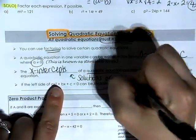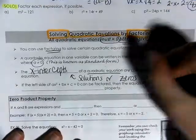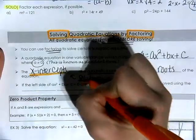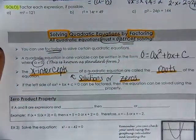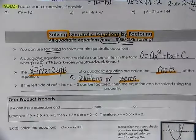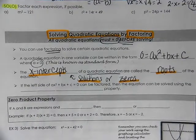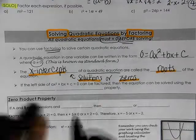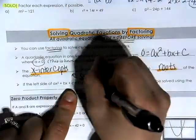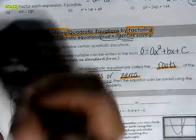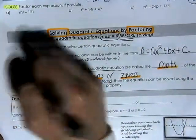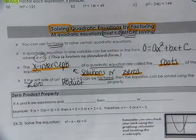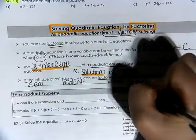These x-intercepts are also known as solutions of the equation, or zeros of the function. You're going to see that language over and over again. The process for identifying x-intercepts, or solving equations, or finding zeros, or looking for roots — all are asking you to do the exact same thing: set that equation equal to zero and factor. If the left side can be factored, then the equation can be solved using the zero product property.